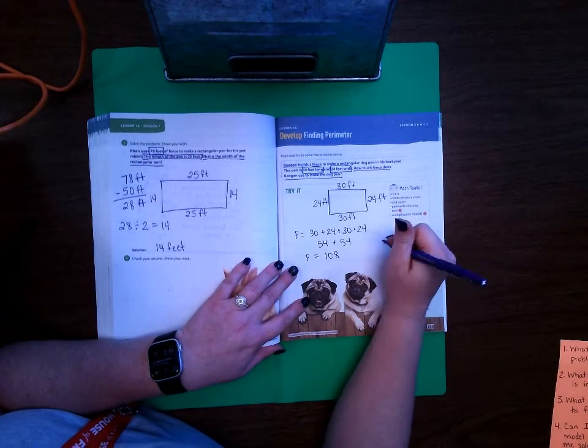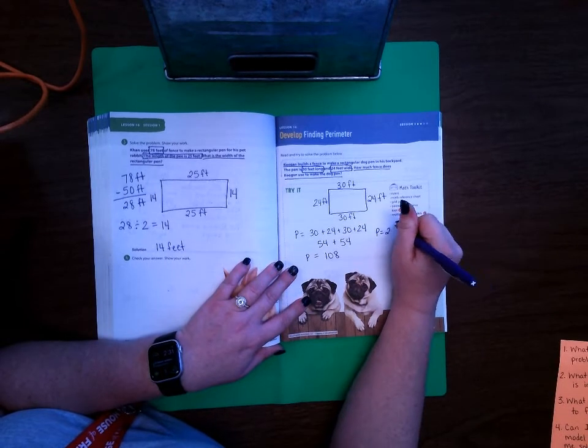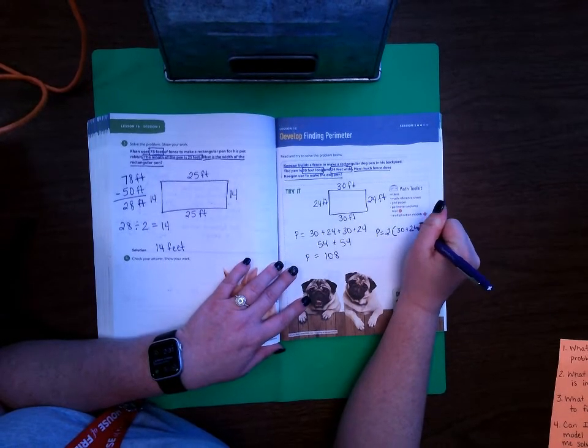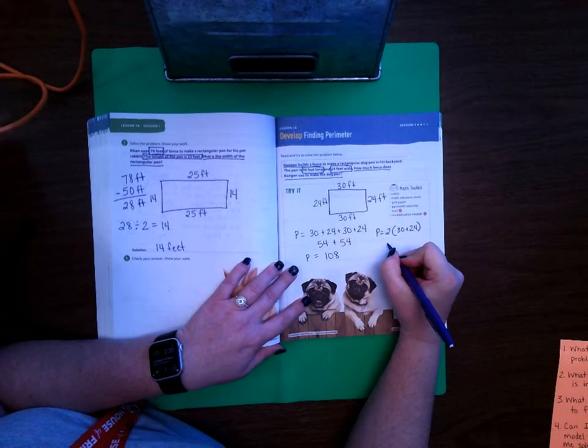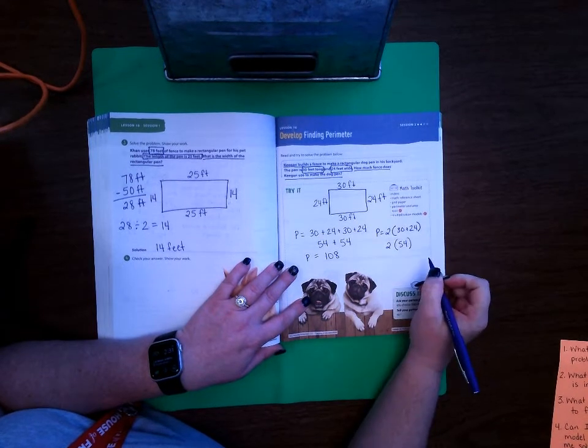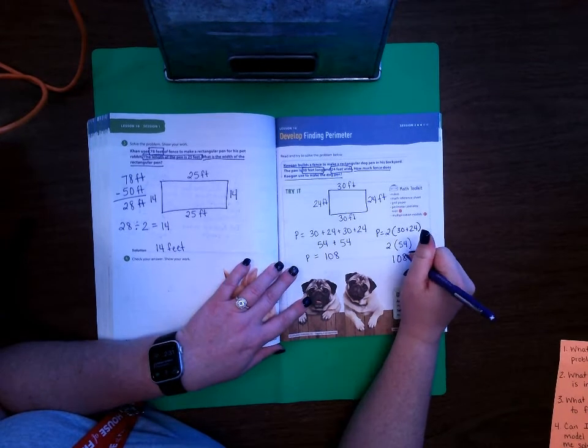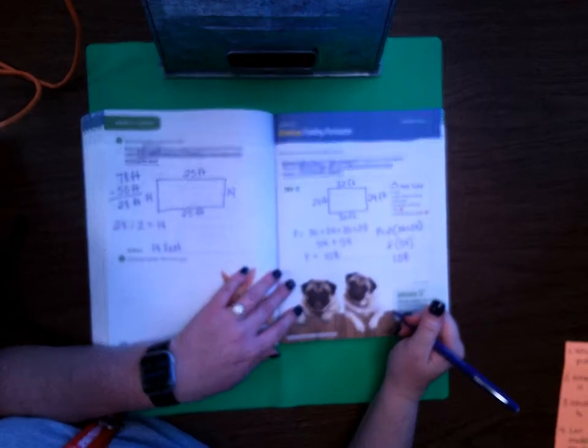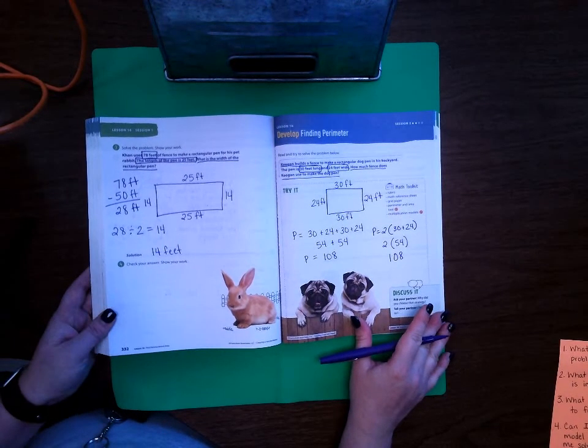Another way that I can solve for the perimeter is I can do 2 times (30 plus 24), and so then it would be 2 times 54 and then when I do 2 times 54 I get my answer of 108. So either one of those ways are how you can solve for the perimeter.